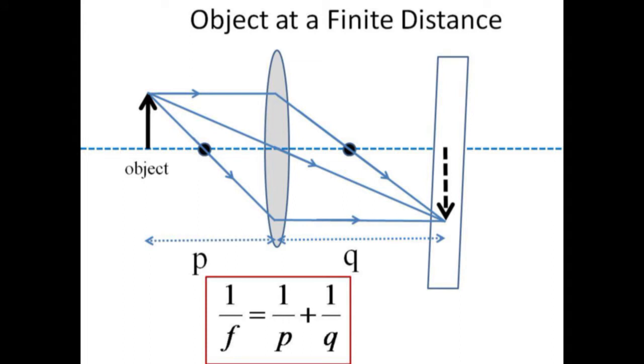For good measure, we can also sketch a ray that passes through the near focal point first and then emerges from the lens parallel to the optical axis. All three rays converge at the tip of the image. The equation relating the object distance to the image distance is that the inverse of f equals the inverse of p plus the inverse of q.